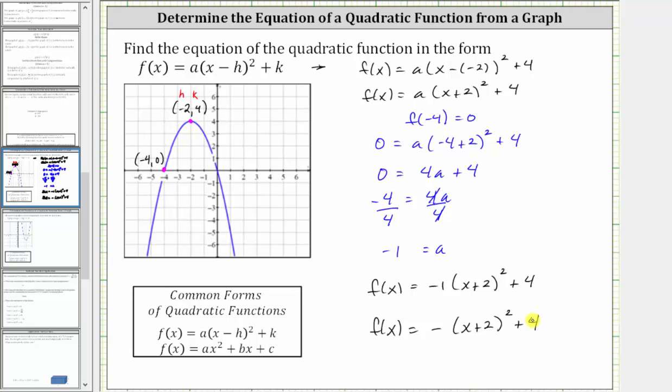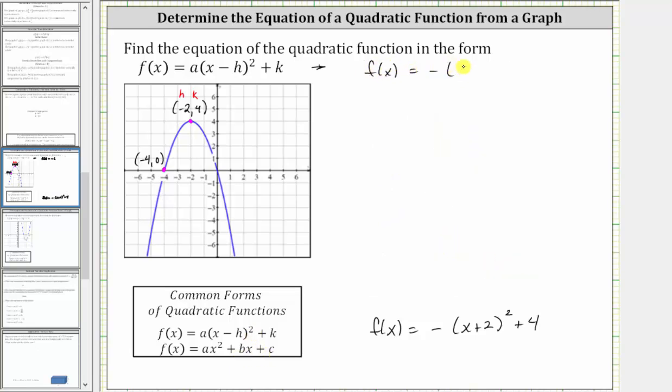Now that we have the function in this form, let's also write the function in the form f(x) = ax² + bx + c. To do this, we'll have to square the binomial, take the opposite, and then add four. There's no shortcuts to squaring the binomial, and we have two factors of x plus two.